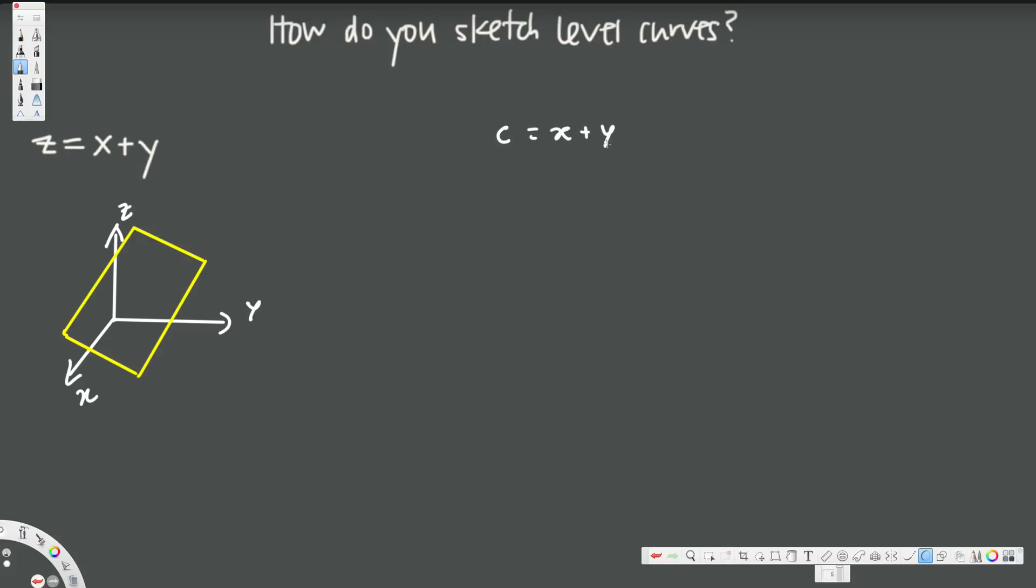We give some values, for example if we set c equal to 0, this is going to be 0 = x + y, therefore y = -x. We all know that the y = -x graph looks like this: a line passing through the origin.